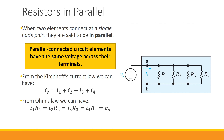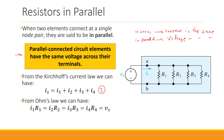Parallelly connected circuit elements have the same voltage across their terminals. To summarize: if elements are in series, the current is the same through all of them; if they are in parallel, the voltage is the same across all of them. That is the conclusion from applying KCL for node A and KVL for the four closed paths.